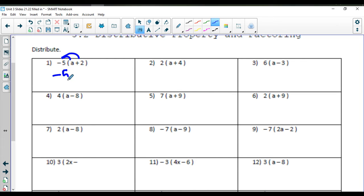So negative five times a, and negative five times a positive two. Two times a, and times positive four, so two a plus eight. Six times a, and six times negative three, so I'm going to get six a minus eighteen.